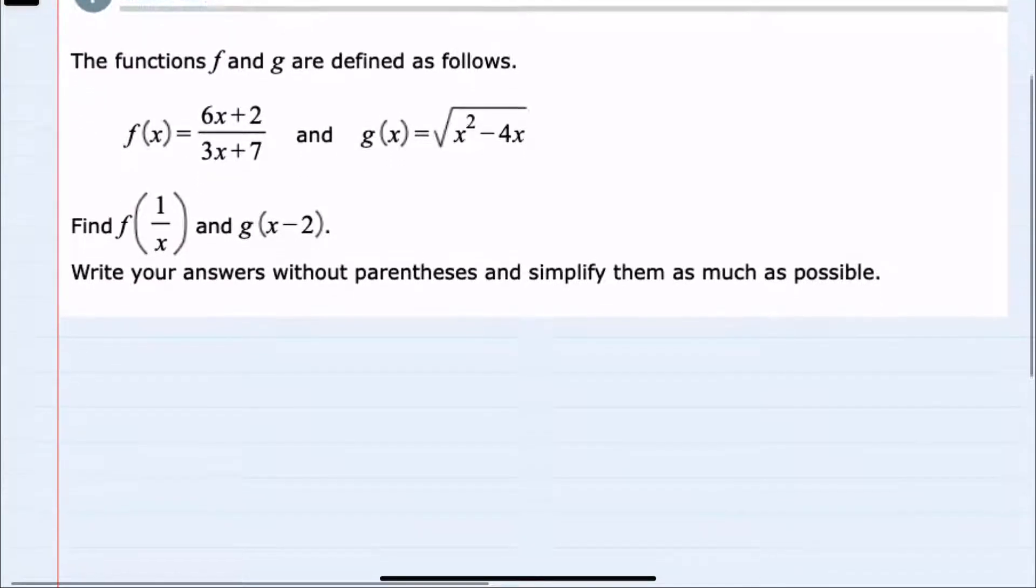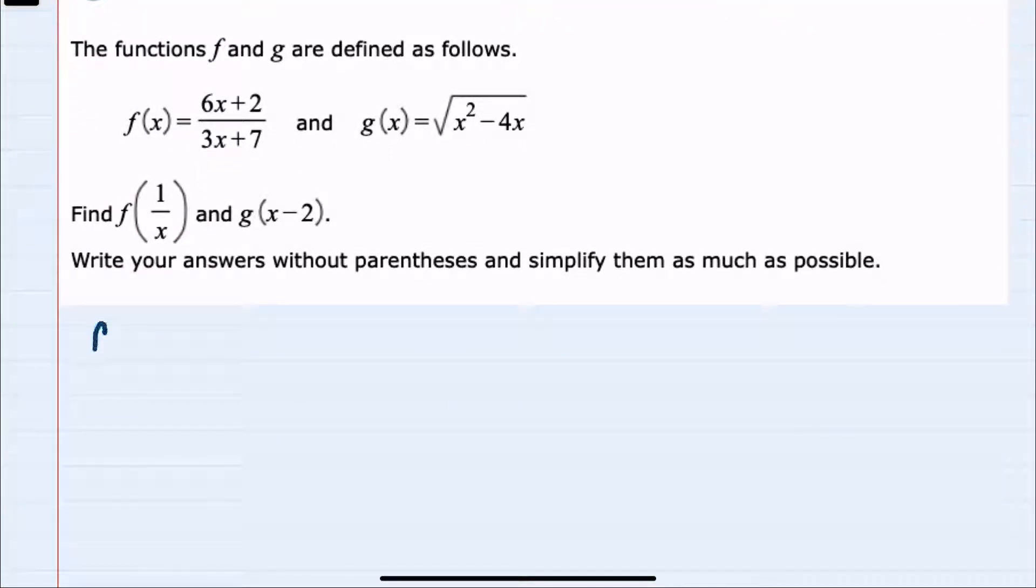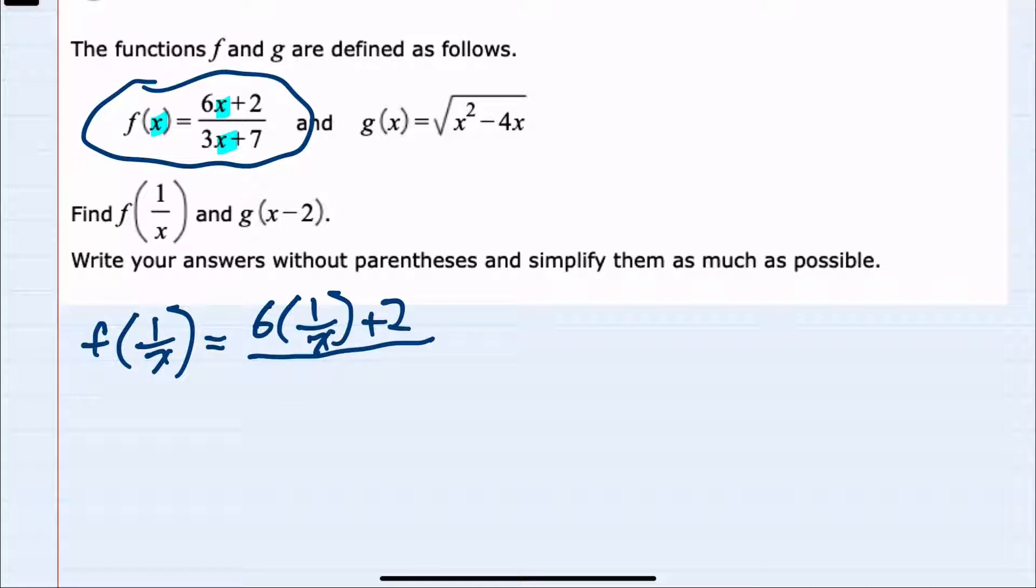So we have two things to calculate, starting with f of 1 over x. We'll be using the f of x function, and we'll be replacing each of these x's with a 1 over x. So we would have 6 times 1 over x plus 2 in the numerator, and in the denominator we would have 3 times 1 over x plus 7.